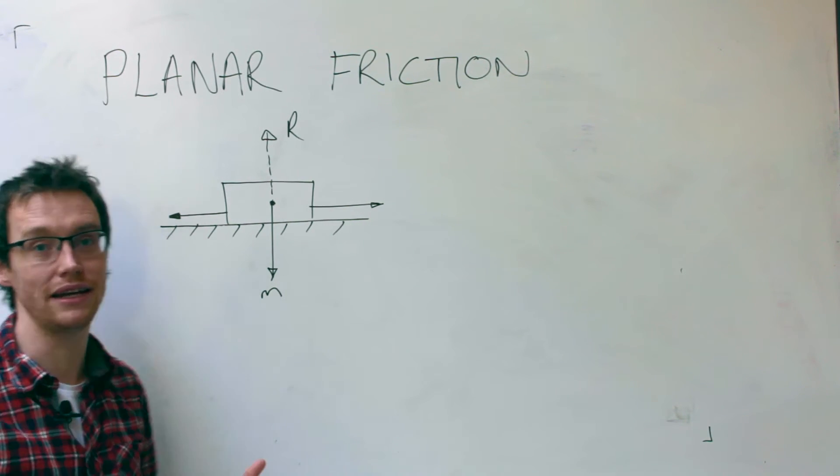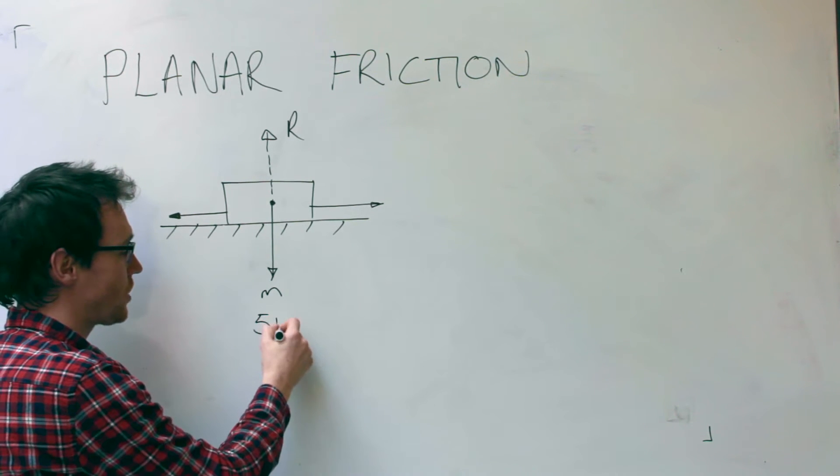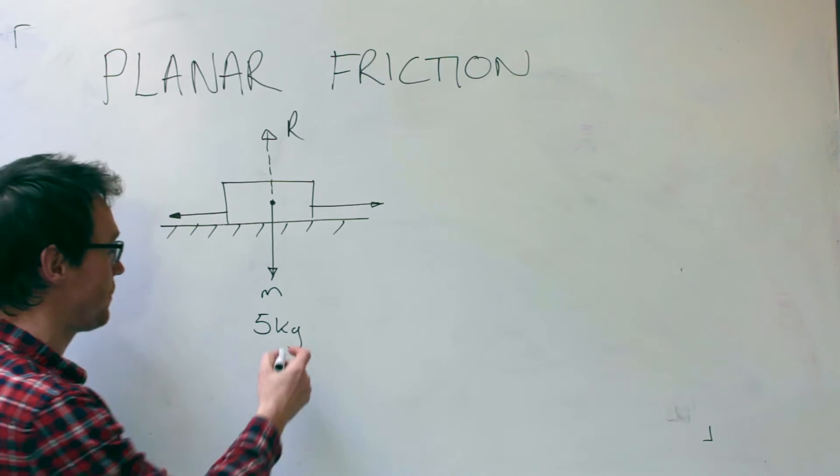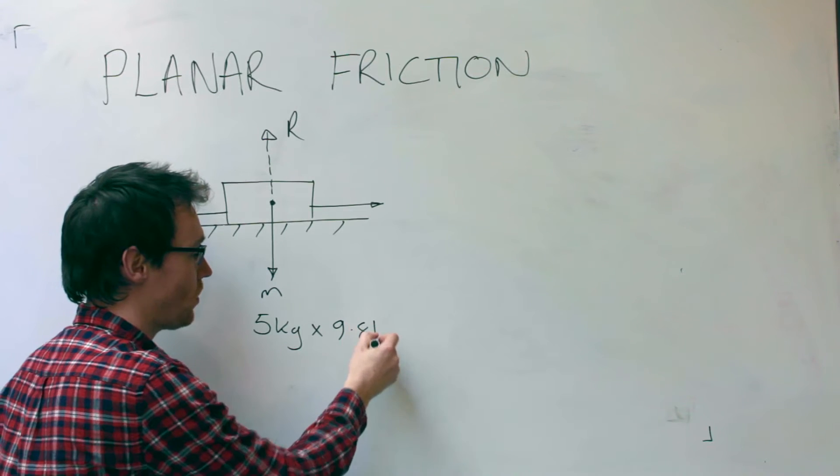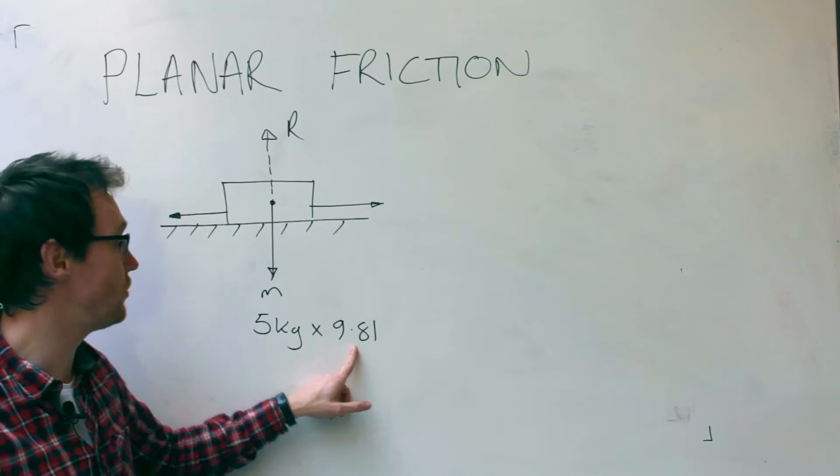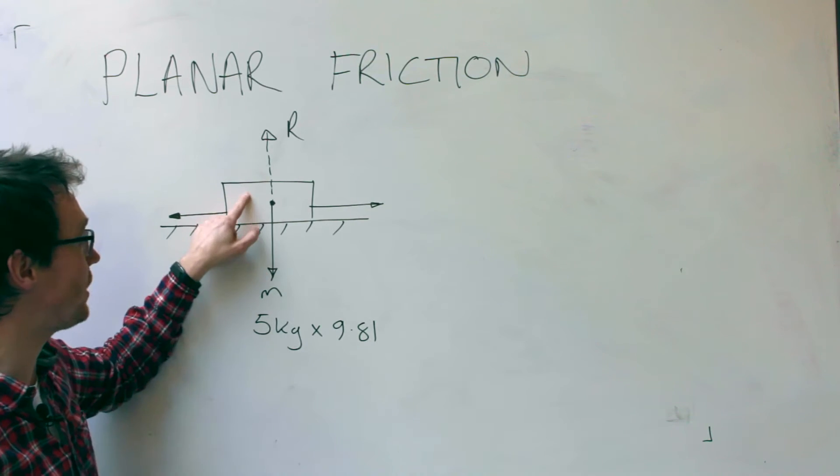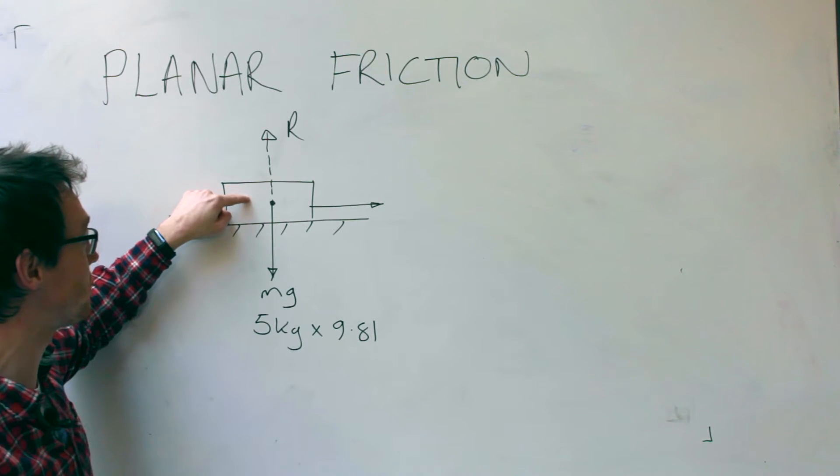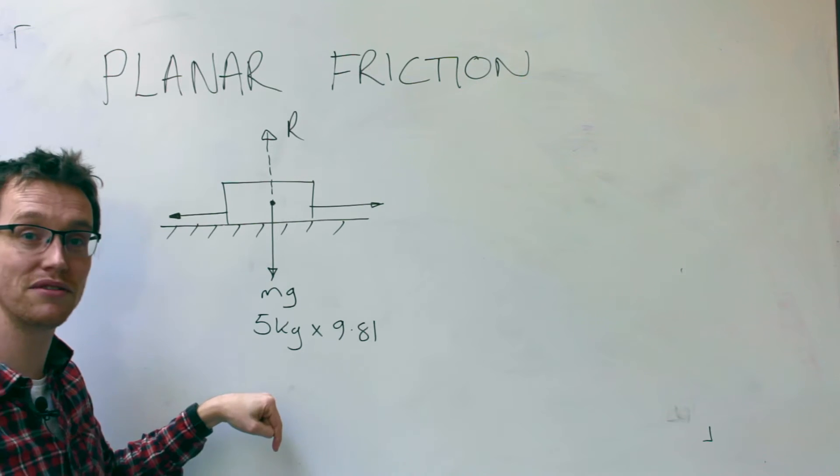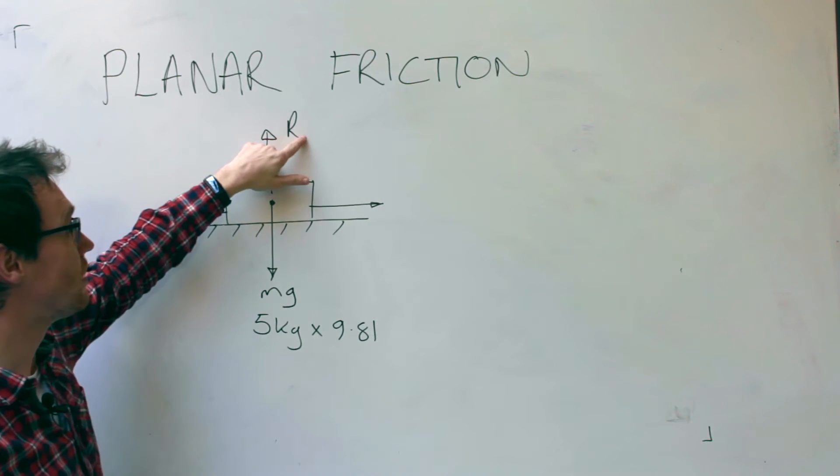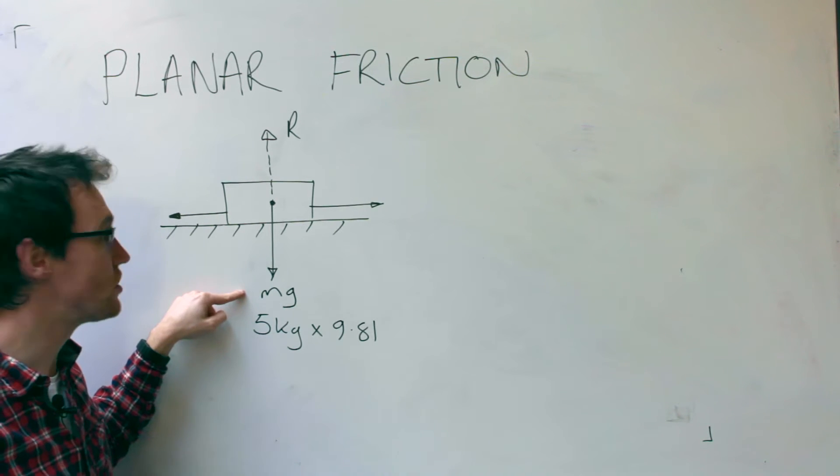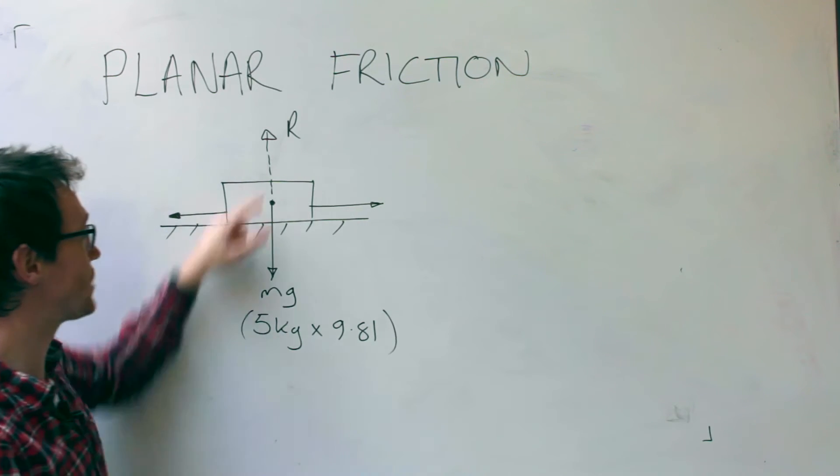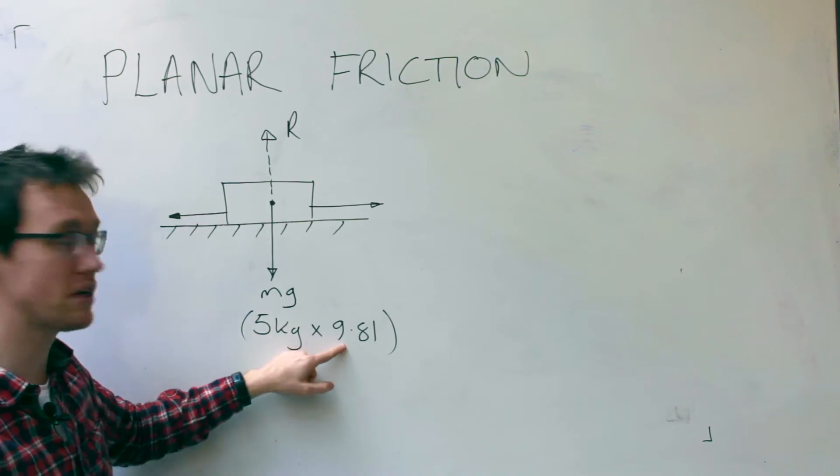Mass is typically given in kilograms, so this might be five kilos, but that's not a force, that's a mass. To calculate the force we need to do 5 times 9.81, 9.81 being gravity. So we quite often denote the force exerted by the block on the plane as mg, the mass times the gravity. Because the block isn't floating up and isn't sinking down, it's in balance, in equilibrium. R must be equal to mg. So if the block is 5 kilos, then R will also be equal to mg, which is 5 times 9.81.